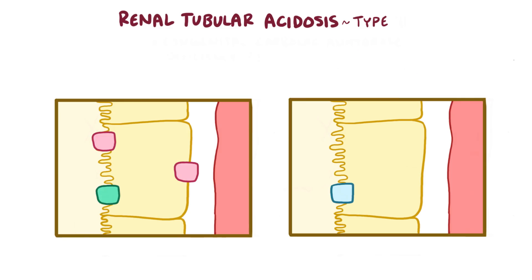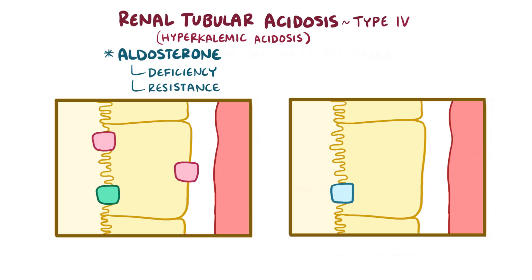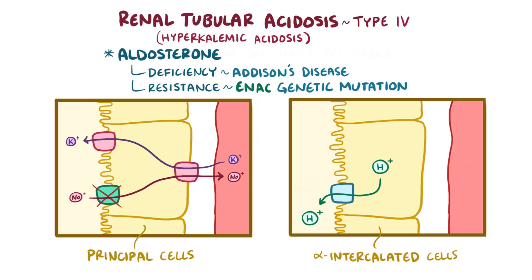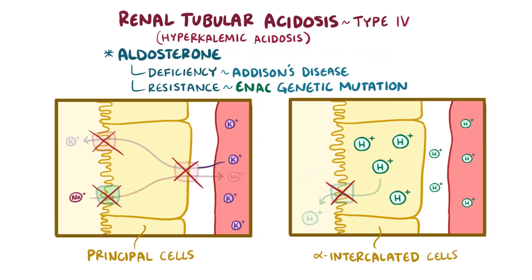Finally, there's renal tubular acidosis type 4, sometimes called hyperkalemic acidosis, and it's classically due to aldosterone deficiency or aldosterone resistance in the collecting ducts, affecting both the principal and alpha intercalated cells. Aldosterone has an important role in the regulation of sodium, potassium, and hydrogen levels. An example of aldosterone deficiency is Addison's disease, where the adrenal gland doesn't produce enough of it. An example of aldosterone resistance is a mutation in the epithelial sodium channel, so that it doesn't respond well to normal levels of aldosterone. Either way, a reduced effect of aldosterone can decrease the function of the sodium-potassium ATPase, making sodium levels fall and potassium levels rise in the blood. Also, a reduced effect of aldosterone on the hydrogen ATPase in the intercalated cells means that more hydrogen gets retained in the cells and eventually in the blood, causing the acidemia.